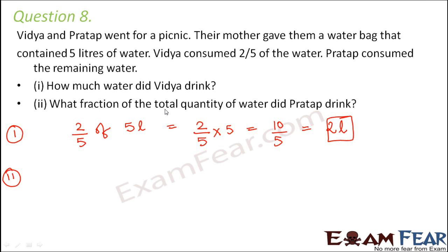What fraction of the total quantity of water did Pratap drink? Now Vidya had consumed 2/5 of the water and the remaining part was consumed by Pratap. Now one simple way to do this is the amount of water that is drank by Pratap will be equal to the total amount of water that is 5 liters minus the amount of water which is drunk by Vidya which is equal to 2 liters. So we can say that 3 liters of water is being consumed by Pratap.